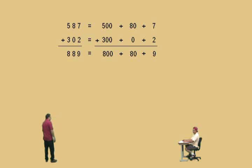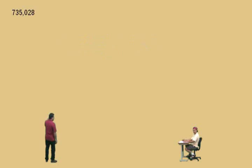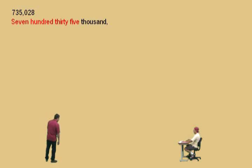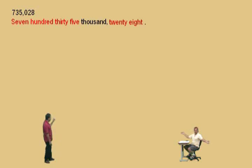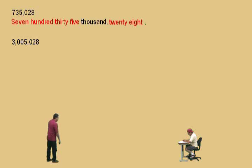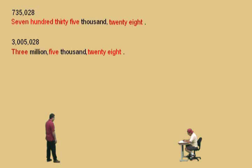Now we're going to read these numbers. How do you say that number, Charlie? Seven hundred and thirty-five thousand, twenty-eight. Very good. Remember, the zero represents the hundreds column — there were no hundreds there. How about this number, Charlie? Three million, five thousand, twenty-eight. That's right — three million, five thousand, twenty-eight. Very nice, Charlie.